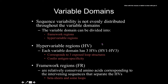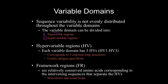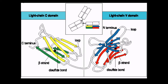Variable domains determine the part of the antibody that binds to the antigen. Sequence variability is not evenly distributed throughout the variable domain — within it there are framework regions, which are relatively conserved because they serve structural purposes, and hypervariable regions, which have the variation needed for antigen binding. The framework region consists of beta sheets with looping structures.